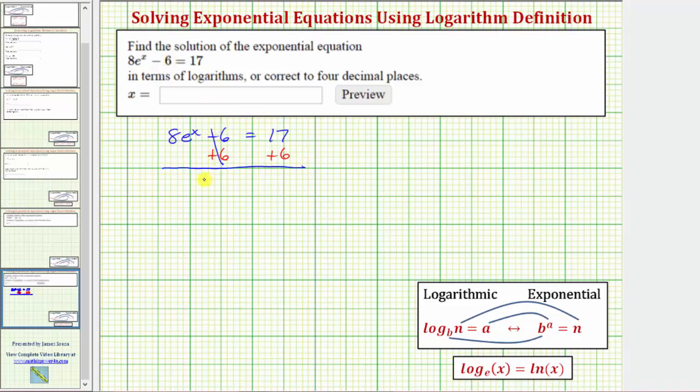Simplifying, we now have 8e^x = 23. Next, we'll divide both sides by eight. Simplifying again, we now have e^x = 23/8.